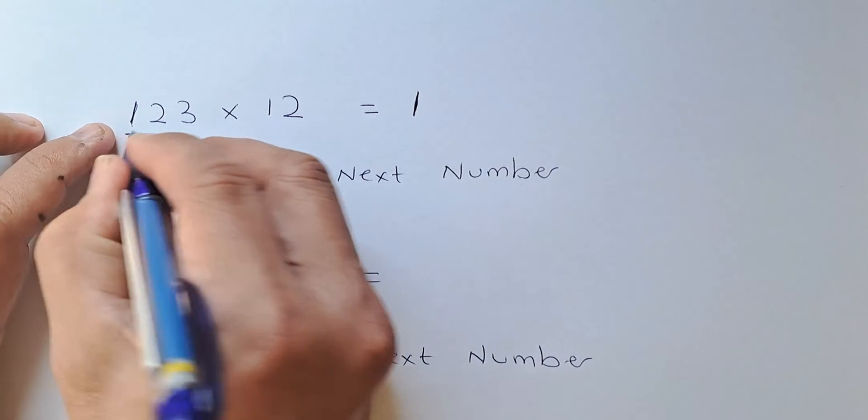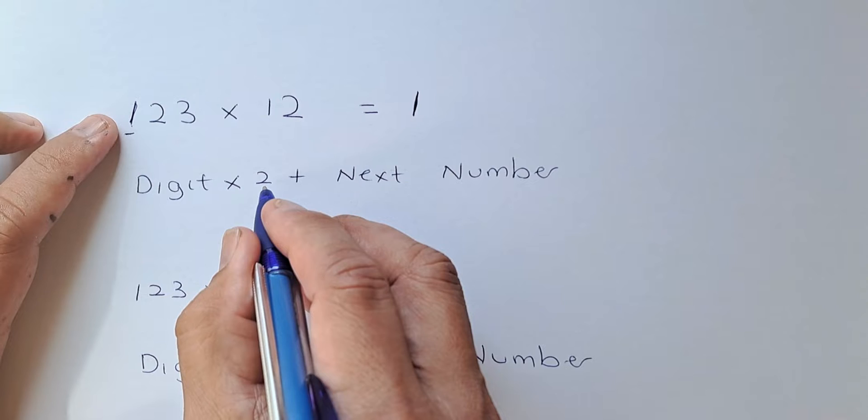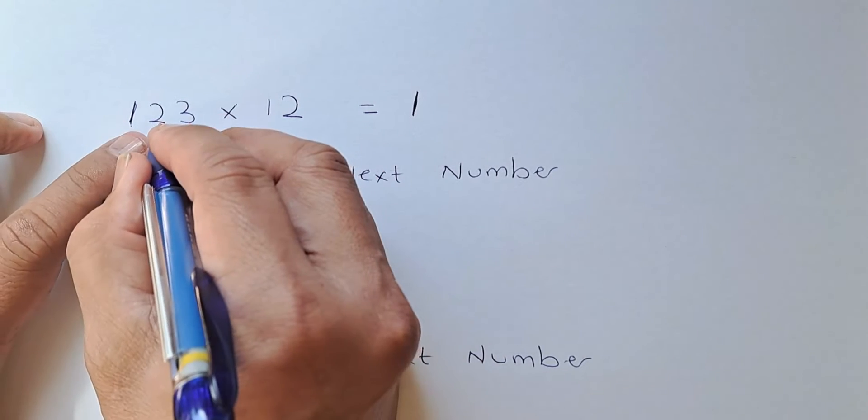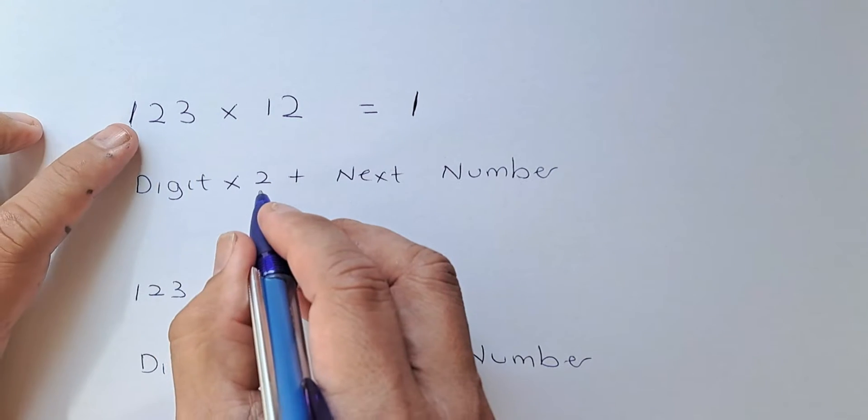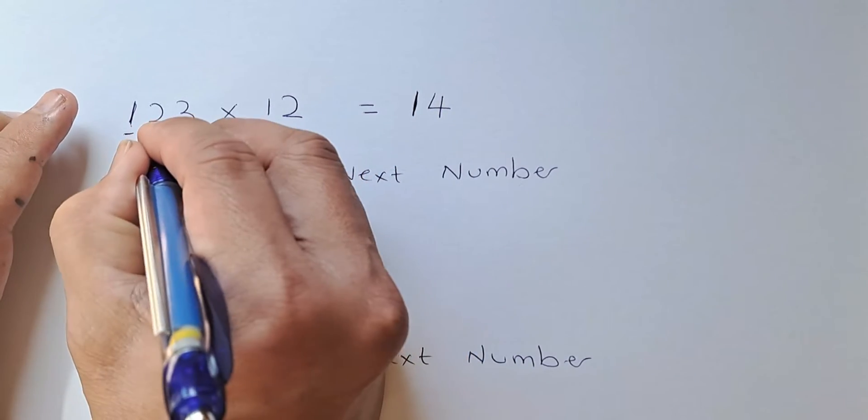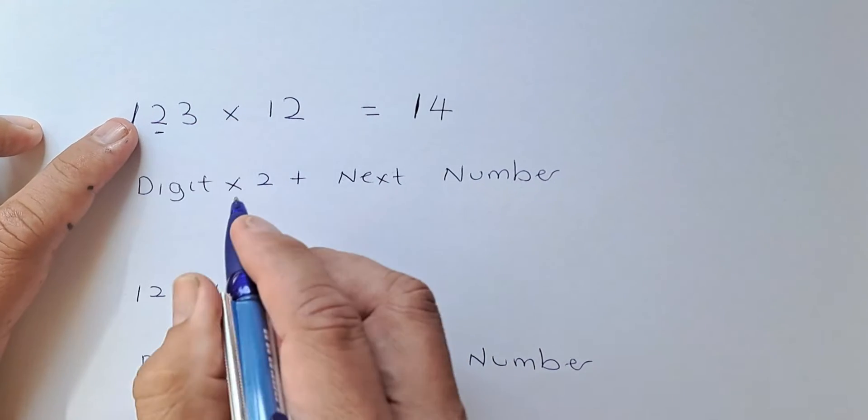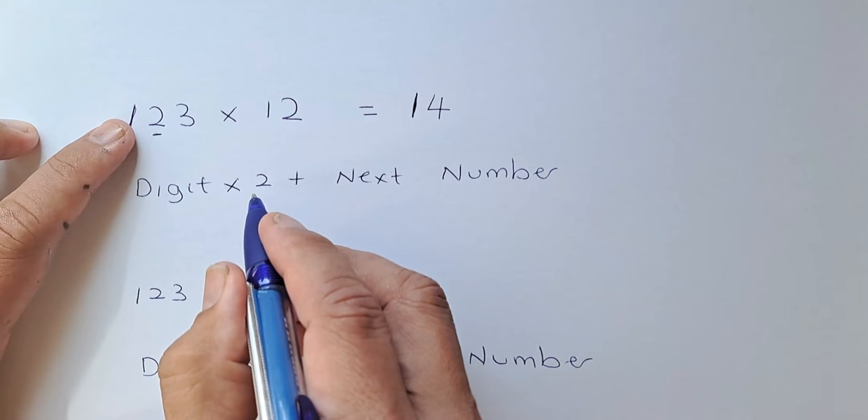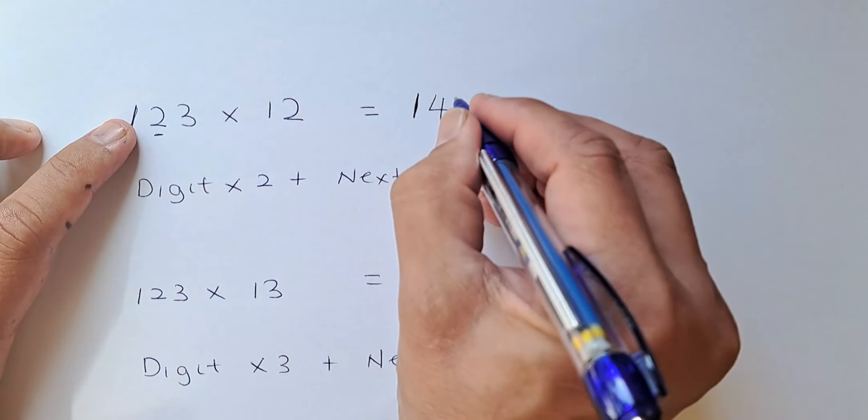So we look at number 1 now. 1 times 2 is going to be 2 plus the next digit is 2. So 1 times 2 is 2 plus 2 is going to be 4. Then we look at 2 now. 2 times 2 is going to be 4 plus the next digit is 3 is going to be 7.